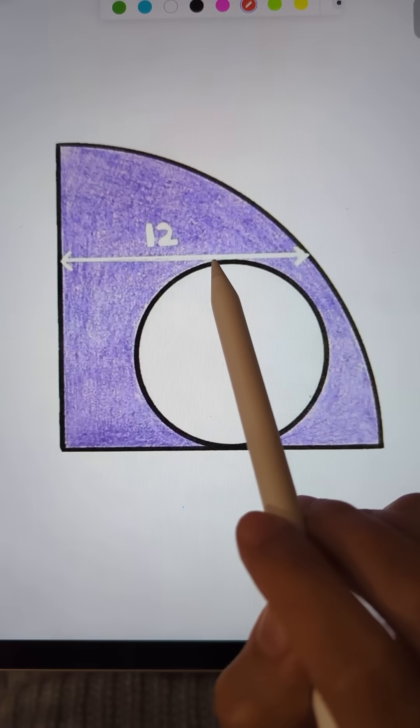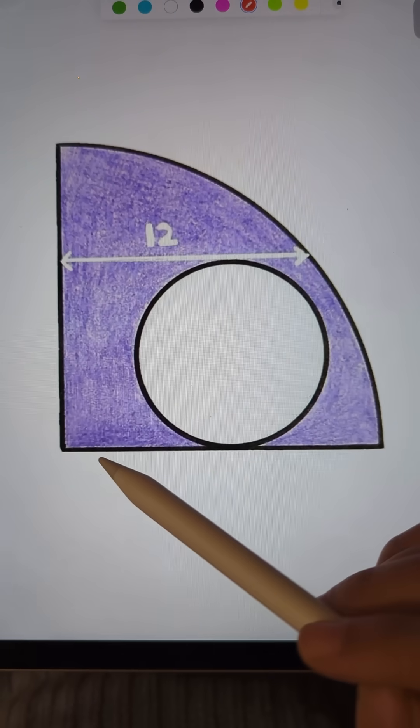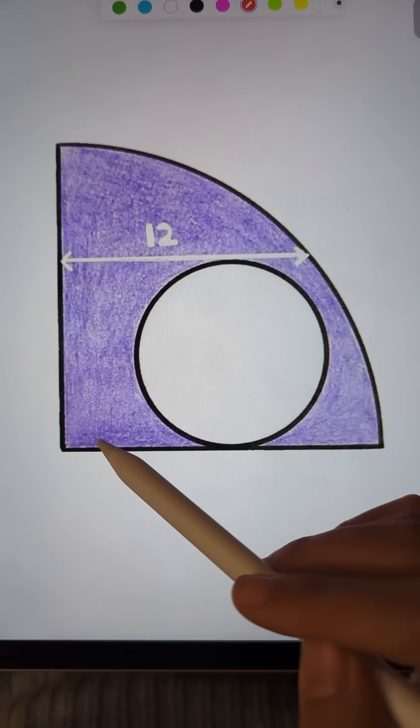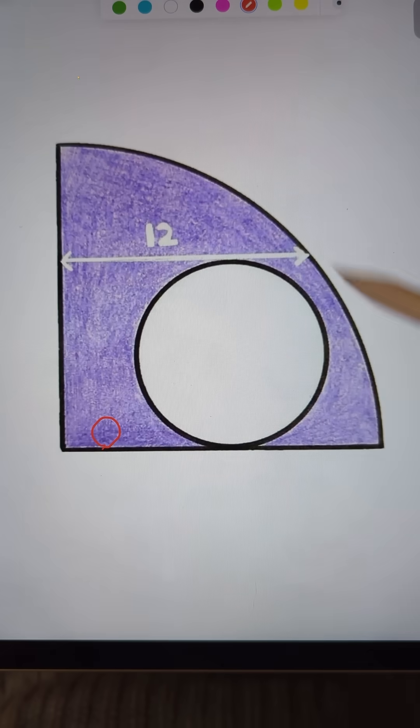It's basically a horizontal line segment that is tangent to the smaller disc. At first glance, I feel like something must be missing, because there are so many ways to put a smaller disc inside of this quarter disc, right?